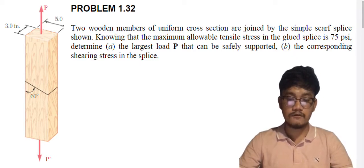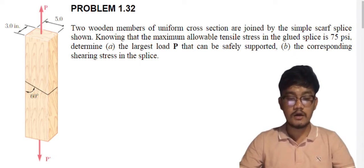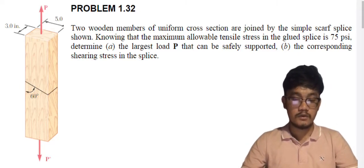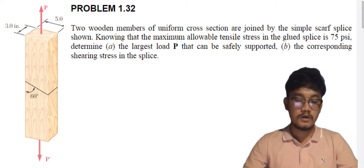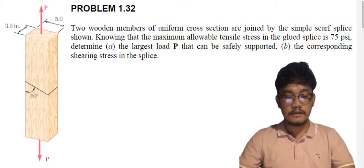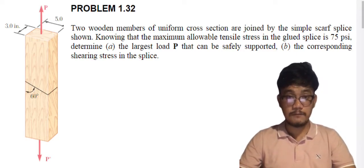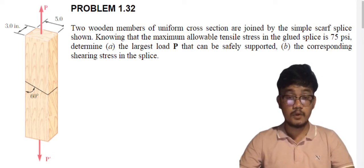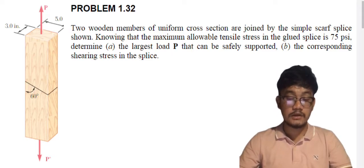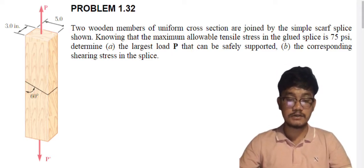two wooden members of uniform cross-section are joined by the simple scarf splice shown, or as shown on the figure. Knowing that the maximum allowable tensile stress in the glued splice is 75 PSI, determine A, the largest load P that can be safely supported, and B, the corresponding shearing stress in the splice.